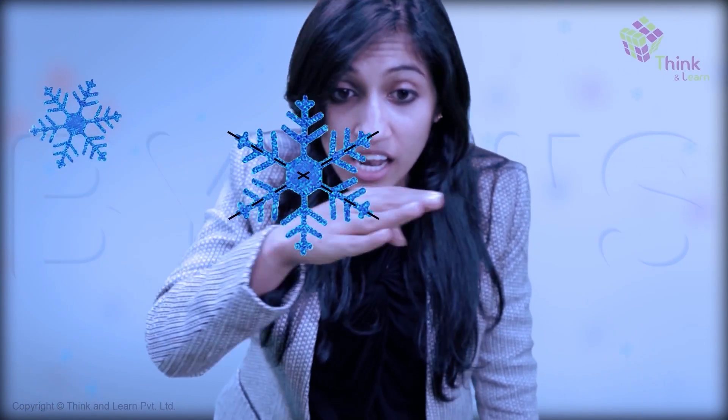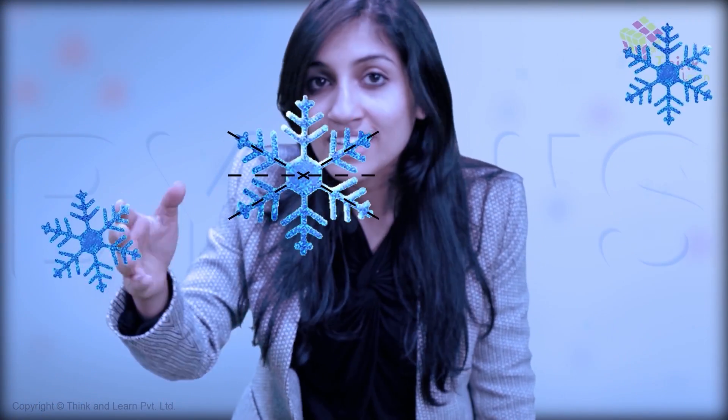And once the rain is over, the beautiful rainbow comes up. It too shows a beautiful symmetry of its own. And when it's snowing, even this beautiful snowflake follows symmetry. Look at the intricate pattern — you can divide it like this, like this, like this, and it's going to give you equal halves.